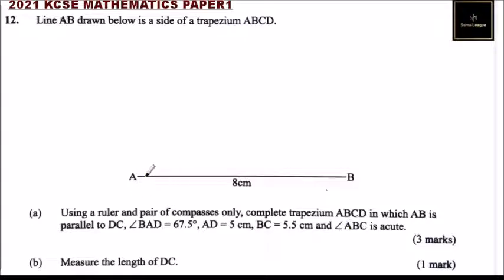So we can make a sketch here. I will not be able to draw this on the computer, but I will give you the guideline on how to go about it. So here we are told angle BAD, so it means angle BAD is here, 67.5.